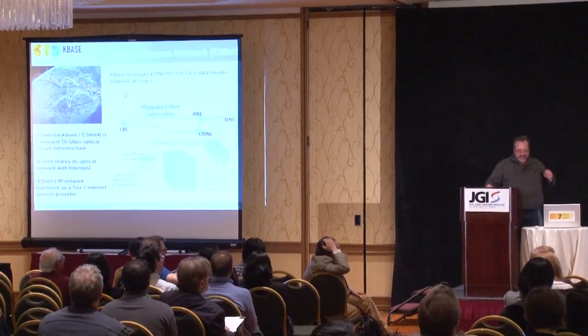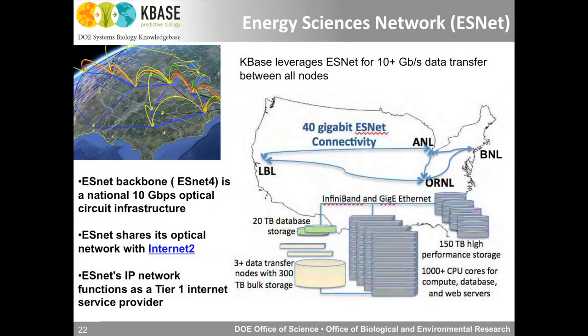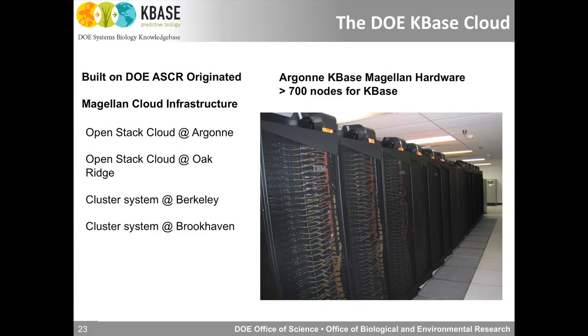We're leveraging ESnet, which is a very powerful thing — it will be critical to reducing latency so you can interact with the system and get access to compute effectively. The compute is based on the Magellan cloud infrastructure and a couple of other systems. Pretty much everything will be OpenStack, and you'll be able to access a lot of this compute through KBase, parceled out as needed. That's one of the things that can allow us to scale.